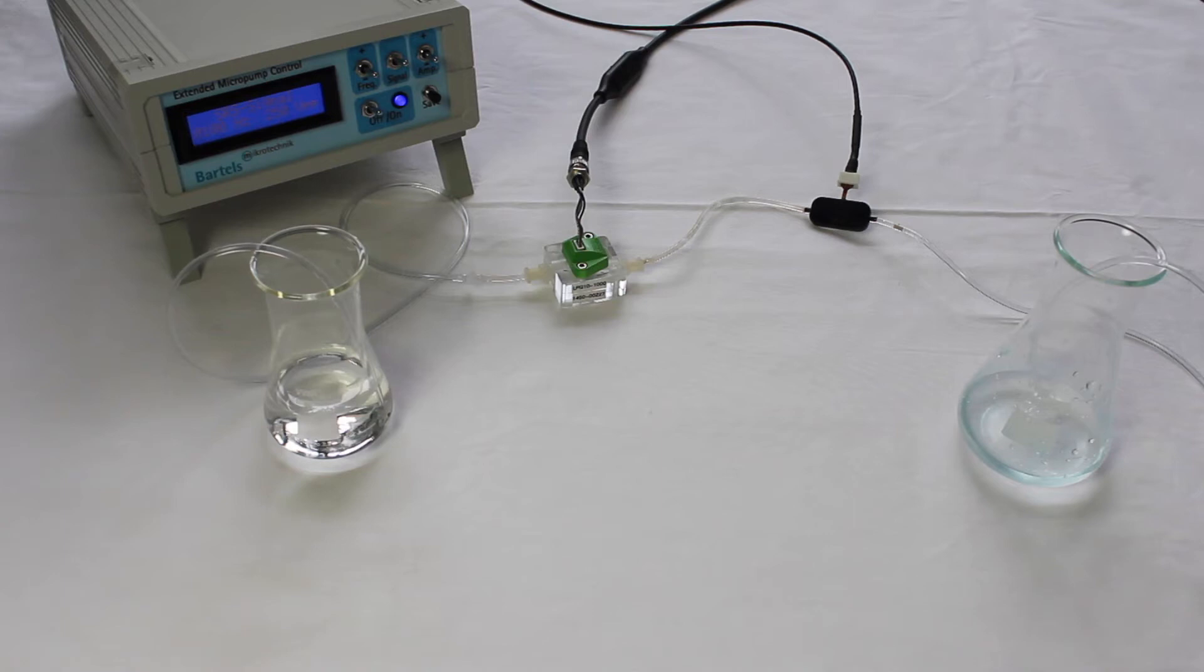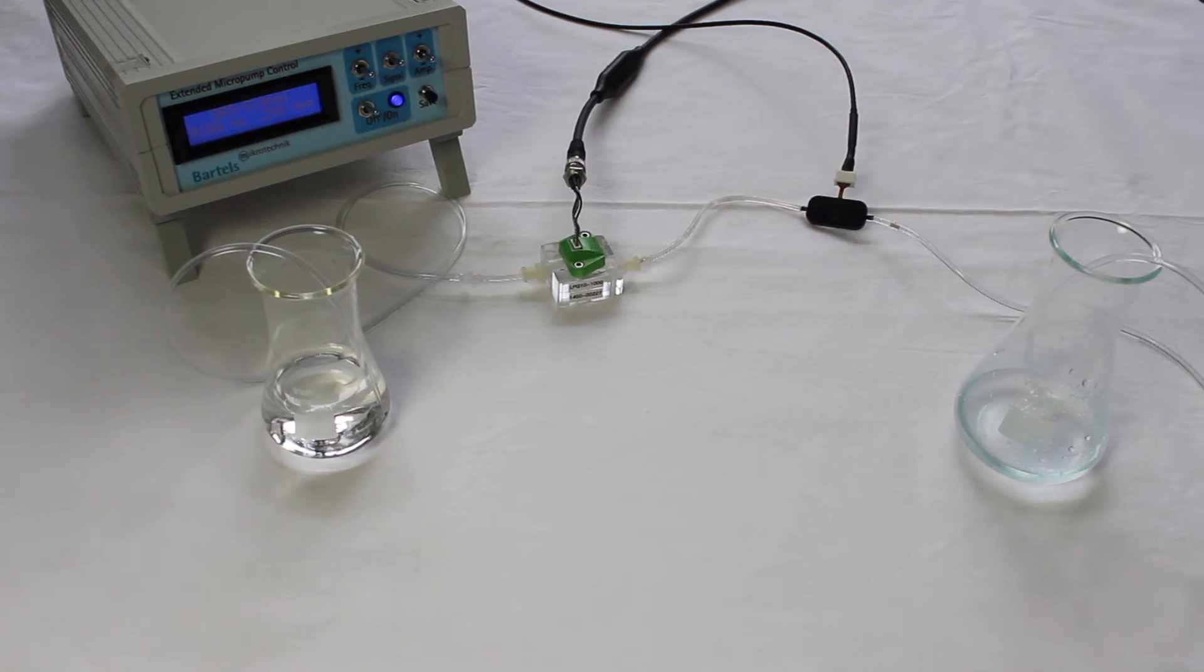When applying the restrictor, you preferably connect it to the pump exit. That way the flow rate is reduced by the fluidic resistance. With maximum amplitude and optimal frequency, the flow rate is only as high as the restrictor allows.